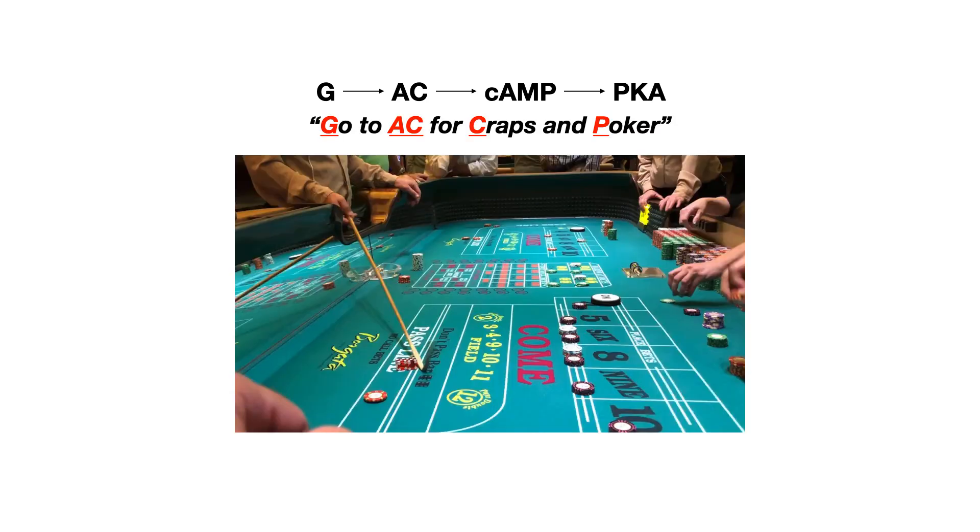So here's my mnemonic. Big picture. G protein turns on adenyl cyclase, turns on cAMP, which turns on PKA. So my mnemonic is that you go to AC for craps and poker. You had to either go to Las Vegas out in the West or Atlantic City or AC over on the East Coast. So you go to AC for craps and poker. G for G protein, AC for adenyl cyclase. The C in craps is the C in cAMP. And the P in poker is the P in PKA. So dumb mnemonic, I get it, but it's better than nothing.